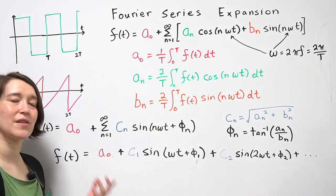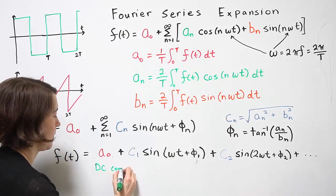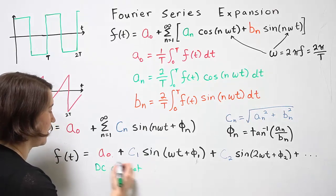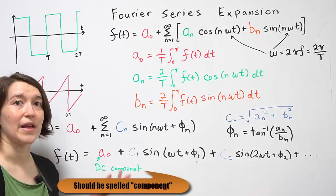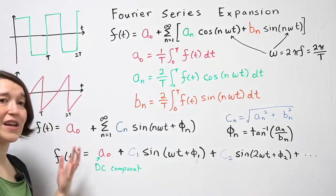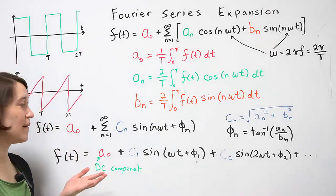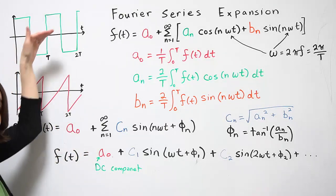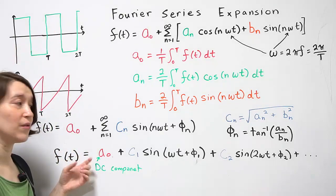This first term is called the DC component, and it is the same as the average of the periodic waveform. In these cases, it would actually be 0 because there's no DC offset. But if you have some offset, then you can have a non-zero value for a₀.